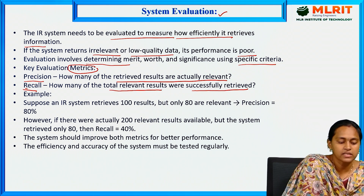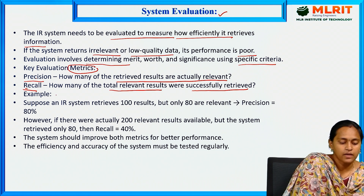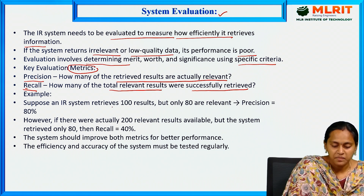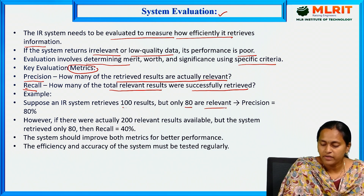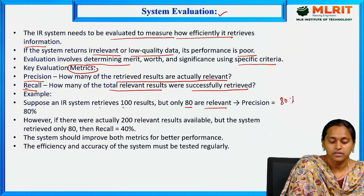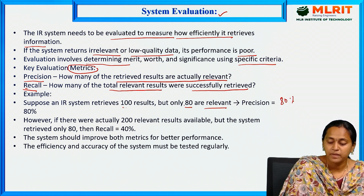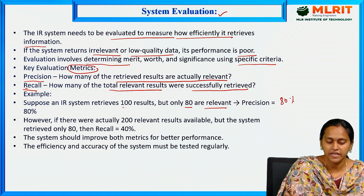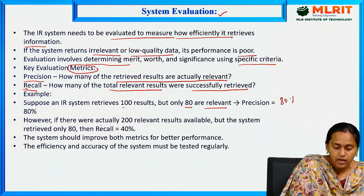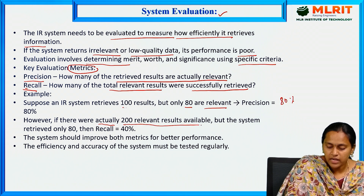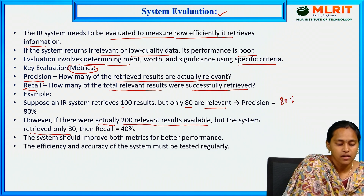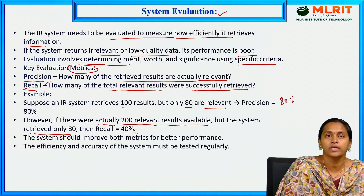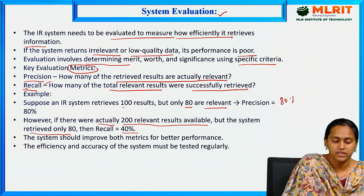For example, suppose an IR system retrieves 100 results but only 80 are relevant — the precision is 80 percent. However, if there are actually 200 relevant results available but the IR system retrieved only 80, then the recall is 40 percent. This is the basic difference between precision and recall.